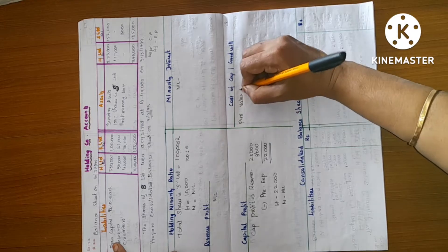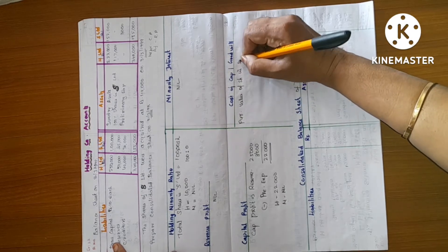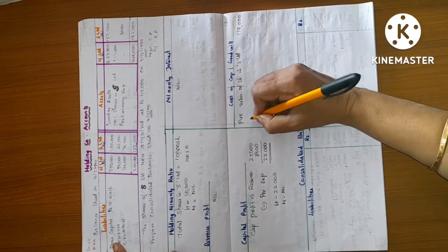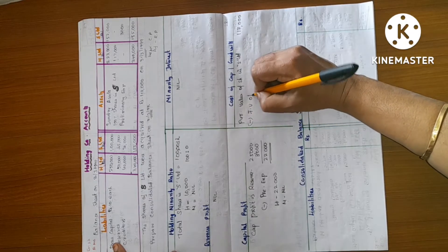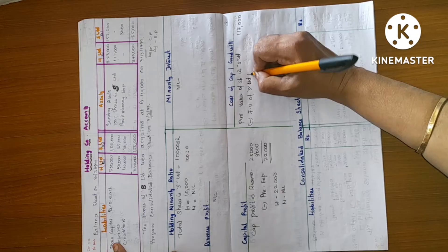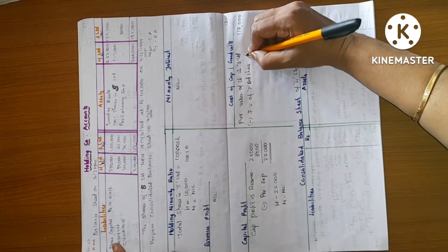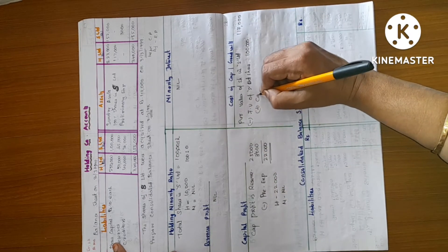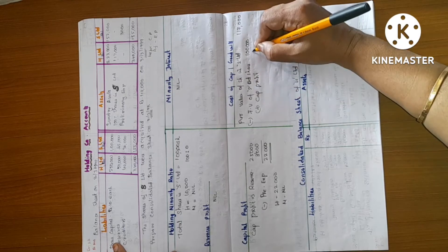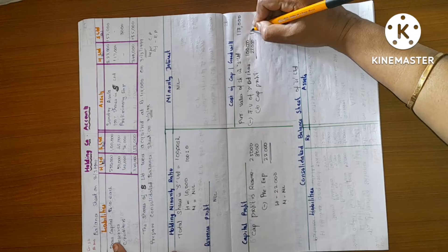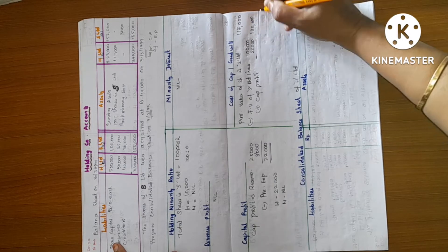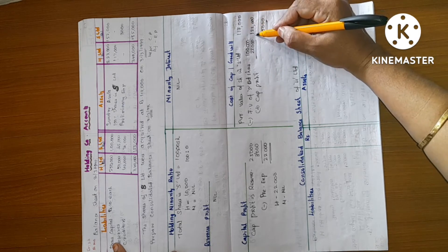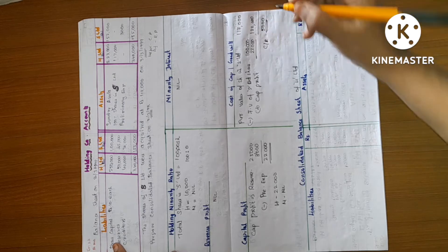Purchase value of shares in S Limited: 1,17,000. Less face value of S Limited shares: face value of 1,00,000. Capital profit add — capital profit here we are 22,000, giving 1,22,000. The difference is 5,000. Value we are going to purchase is 1,17,000 because the benefits are 1,22,000. So, this is capital reserve.